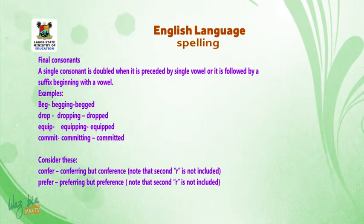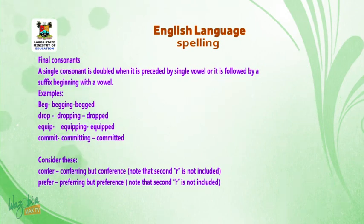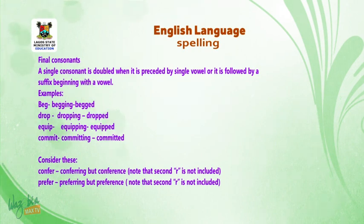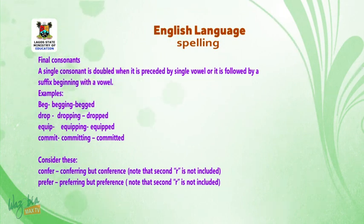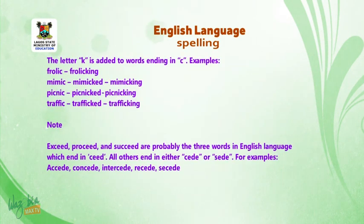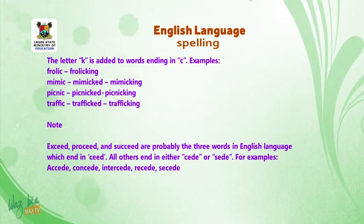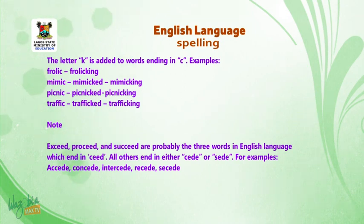Final Consonant: a single consonant is doubled when it is preceded by a single vowel and followed by a suffix beginning with a vowel. Examples: beg — begged, drop — dropping — dropped, equip — equipping — equipped, commit — committing — committed. Note: confer — conferring but confirmed — the second R is not included. Preferred — preferring but preference — the second R is not included. The letter K is added to words ending in C.